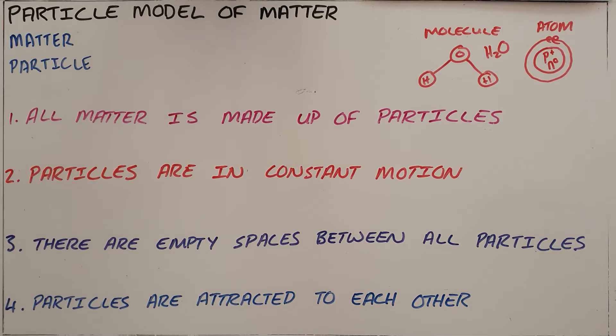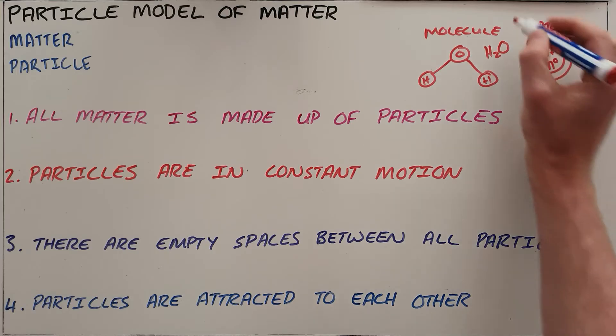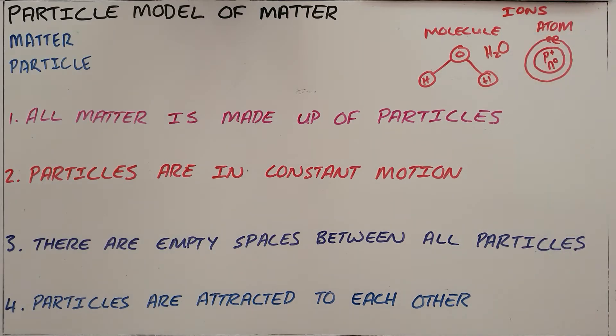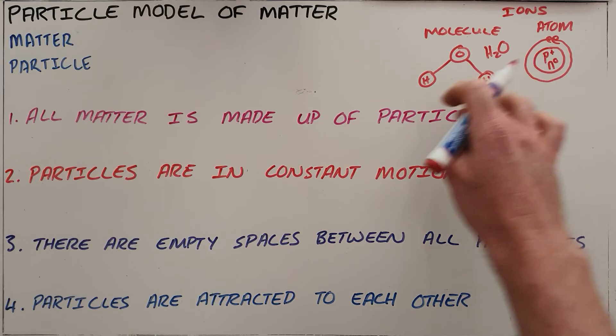The first one is that all matter is made up of particles. Basically, if you had a strong enough microscope and you could zoom in far enough on any matter, whether it's a solid, a liquid, or a gas, you would eventually find that it is made up of either atoms or molecules. The third type of particle we know is ions, which will be discussed later.